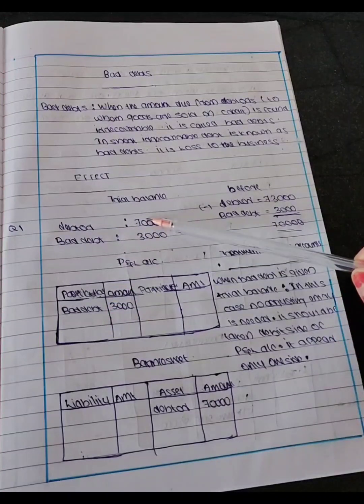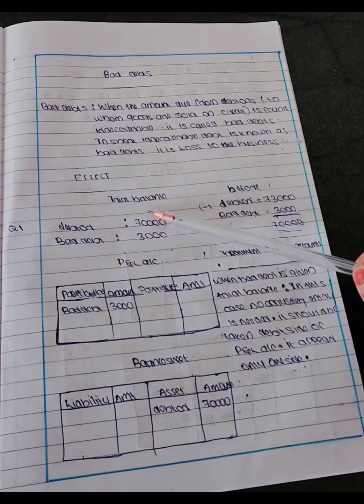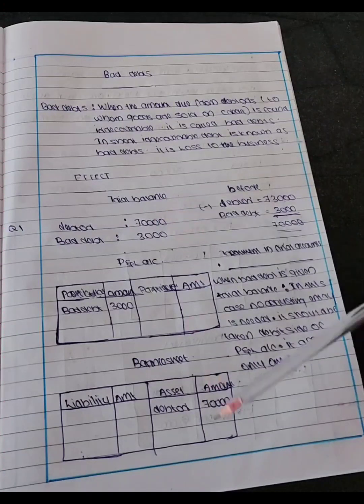If you find a debtor, we can find it as an asset. That's on the balance sheet asset side.